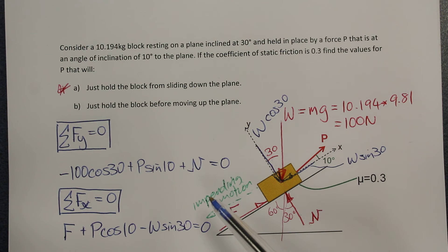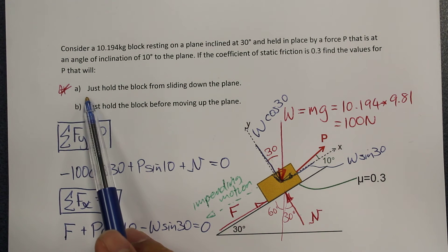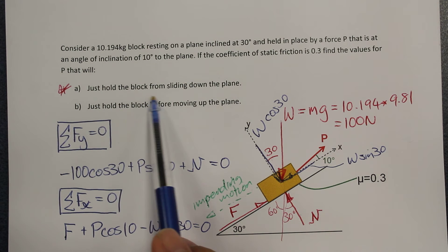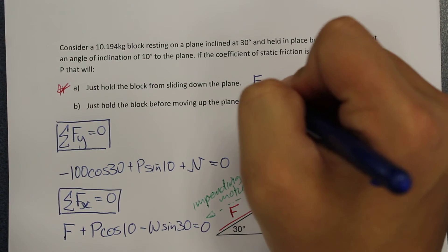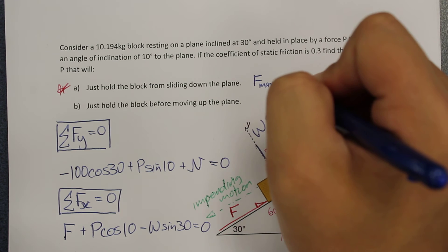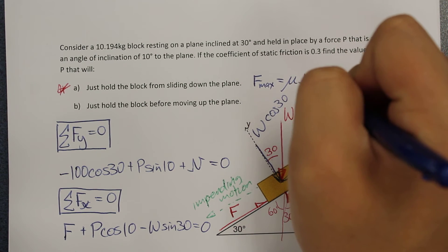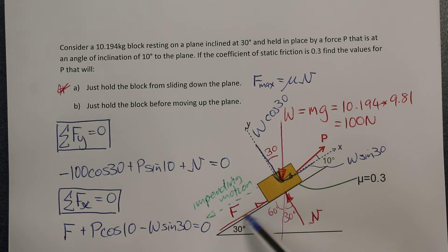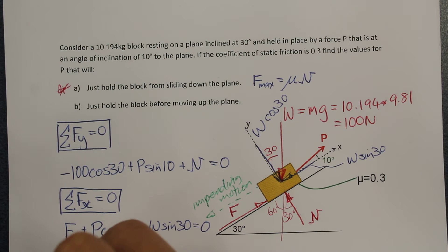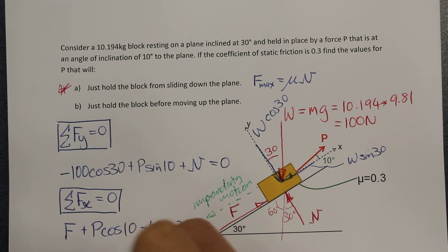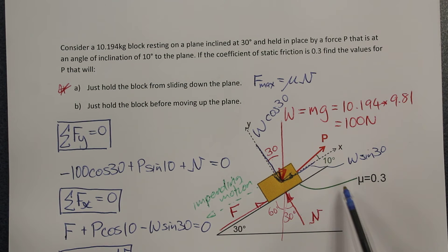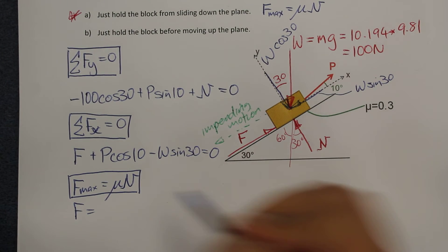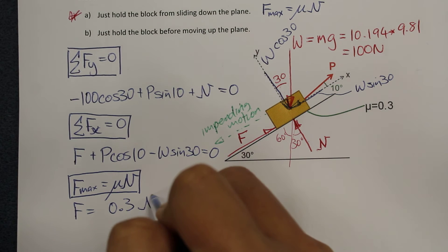The third equation relates to the maximum friction in our system. The question asks for the force to just hold the block from sliding down, meaning the friction equals the maximum friction. The relationship between maximum friction and normal force is F max equals mu times N. With mu equal to 0.3, our third relationship is F equals 0.3 times N.